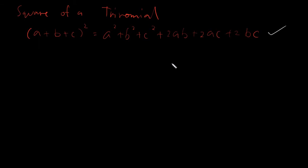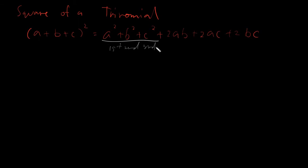I will just read it down to you. What you need to do is you need to get the square separately — you need to get the square of your first, second, and third term. You need to get the square of each of them.